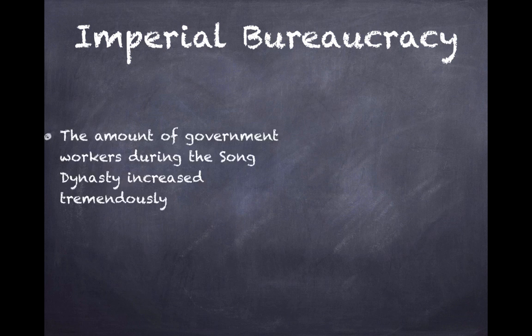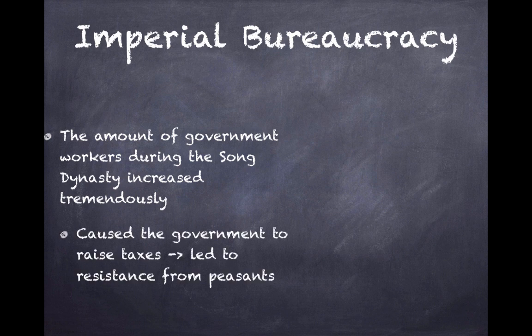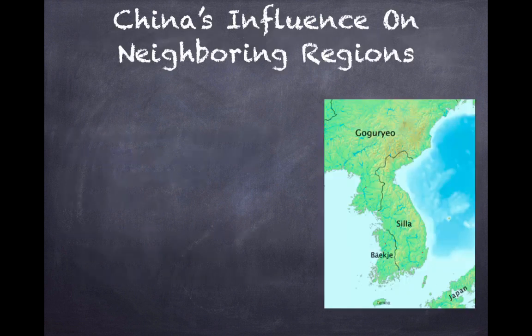Now, imperial bureaucracy. The number of government workers during the Song Dynasty increased tremendously, and this caused the government to raise taxes, which led to resistance from poorer peasants who did not want to pay taxes.